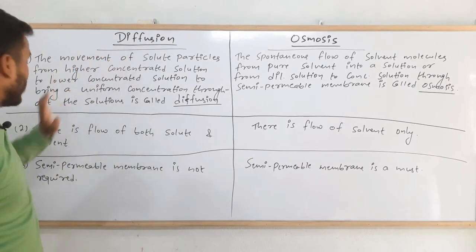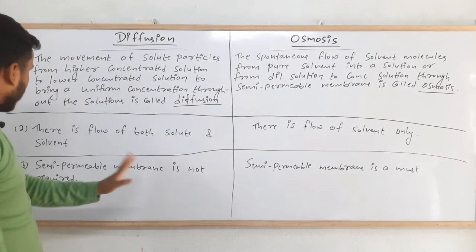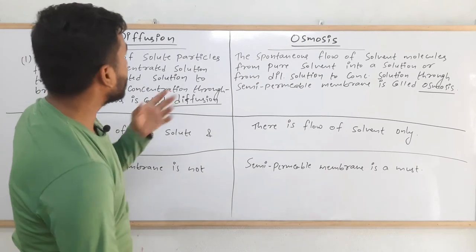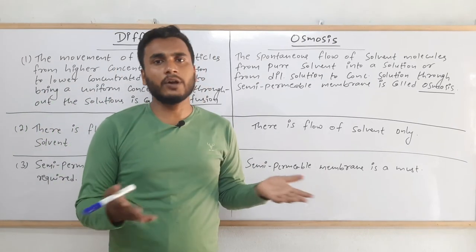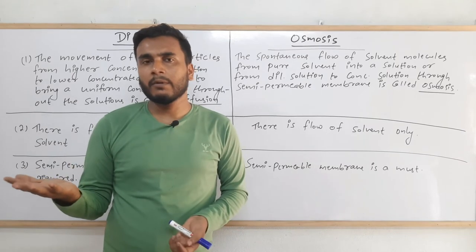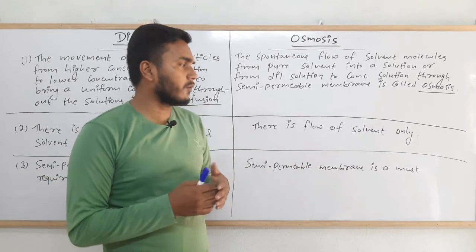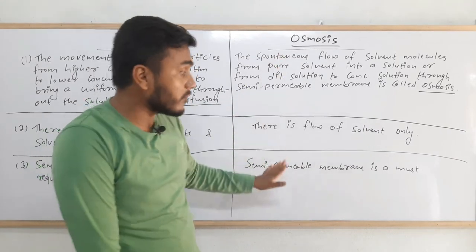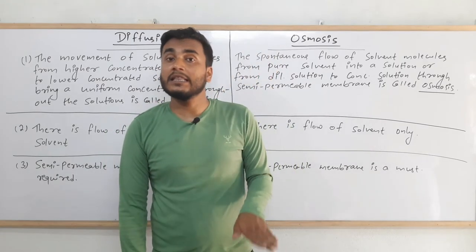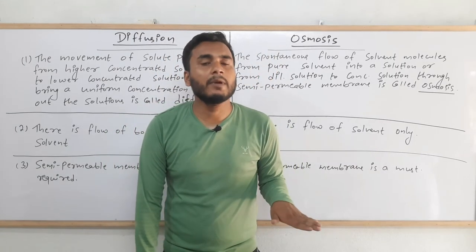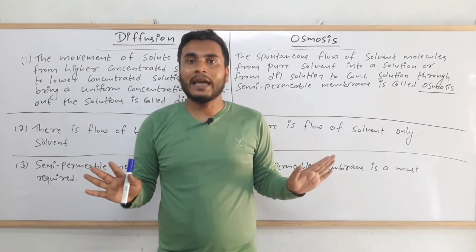The third and final difference is that in diffusion, a semi-permeable membrane is not required — it could be a permeable membrane or even a semi-permeable membrane, either is fine. But in osmosis, a semi-permeable membrane is a must. Without a semi-permeable membrane, osmosis cannot happen.